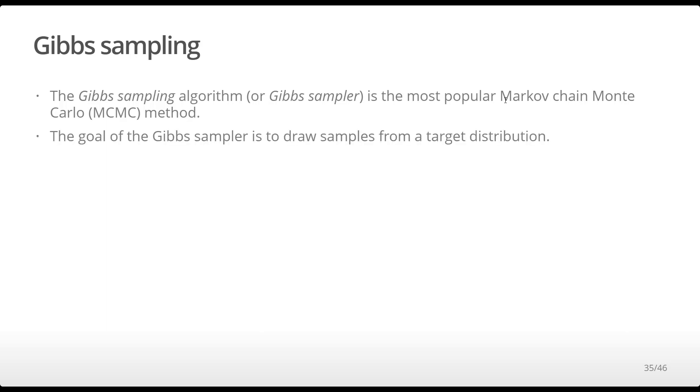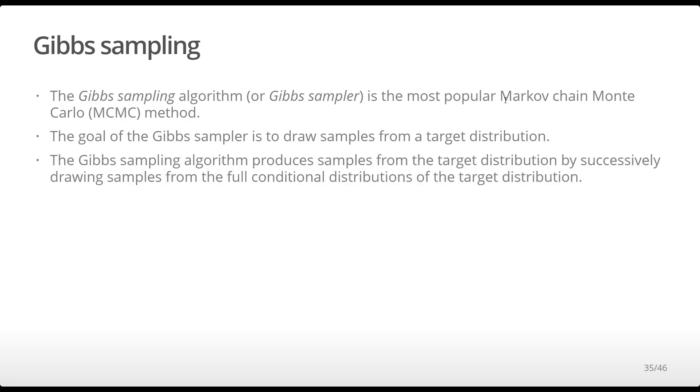The goal of the Gibbs sampler is to draw a sample from a target distribution. Since the Gibbs sampler is an MCMC method, it samples from a Markov chain. In the case of the Gibbs sampler, you iteratively draw samples from the full conditional distributions arising from the target distribution, which we'll look at more closely in the next slide.